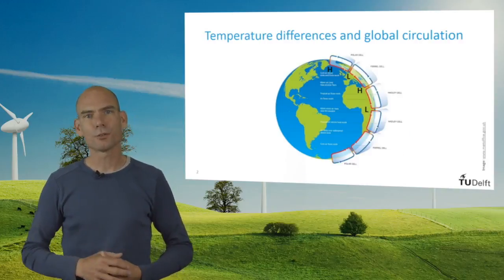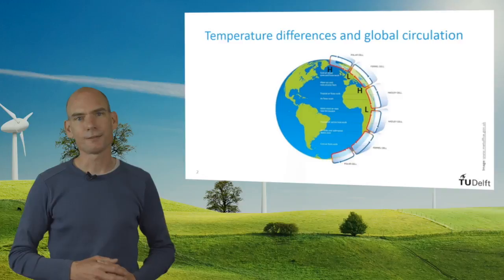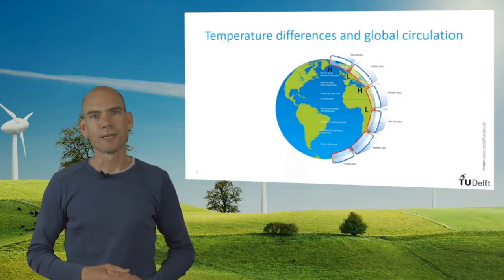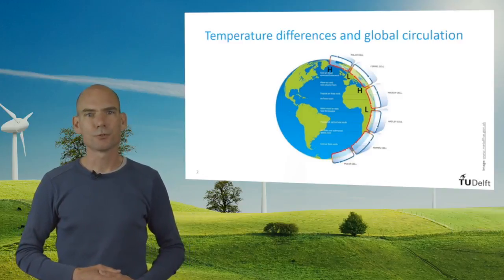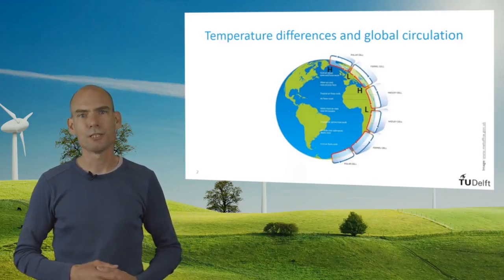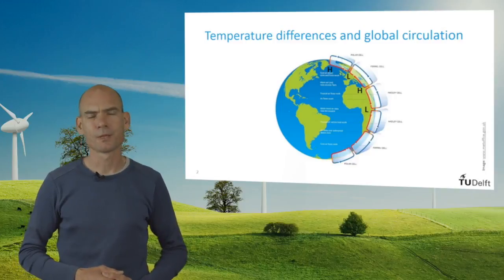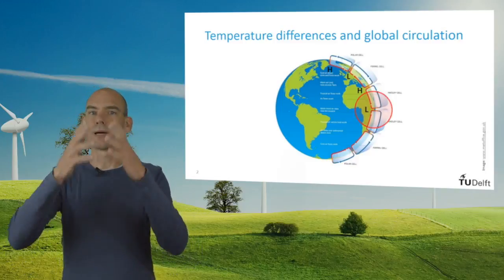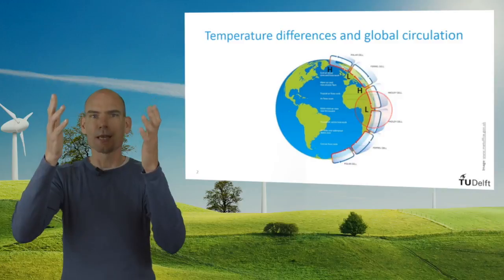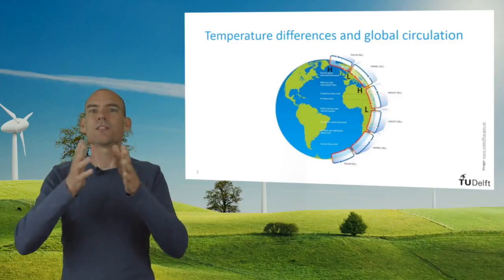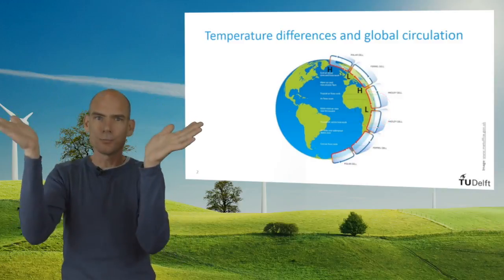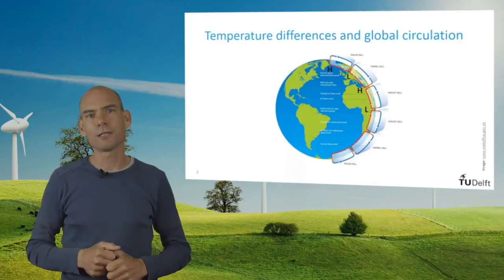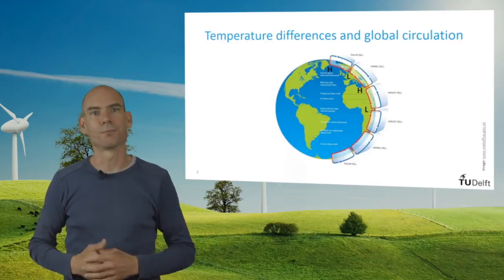If you look at the Earth's atmosphere from the side, you can see how the temperature variation over the Earth's surface leads to circulation cells. Around the equator warm air rises, and higher up in the atmosphere this air has to make place for new rising air and therefore it moves either north or south.